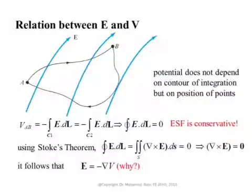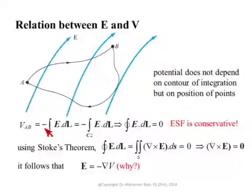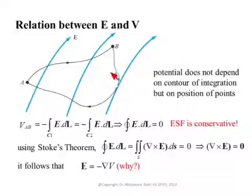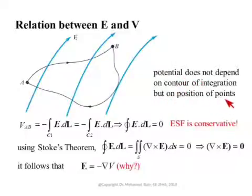The last part of this lecture addresses the relationship between E and V, the electric field and the scalar potential. We have seen that V_AB equals the negative work done against the electric field per charge in moving a unit charge from point A to point B. The result does not depend on the contour of integration, but rather on the position of the endpoints — the position of A and position of B.